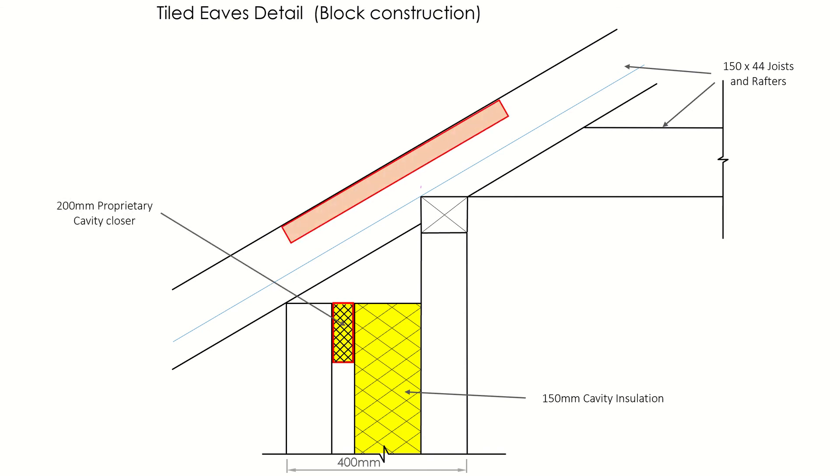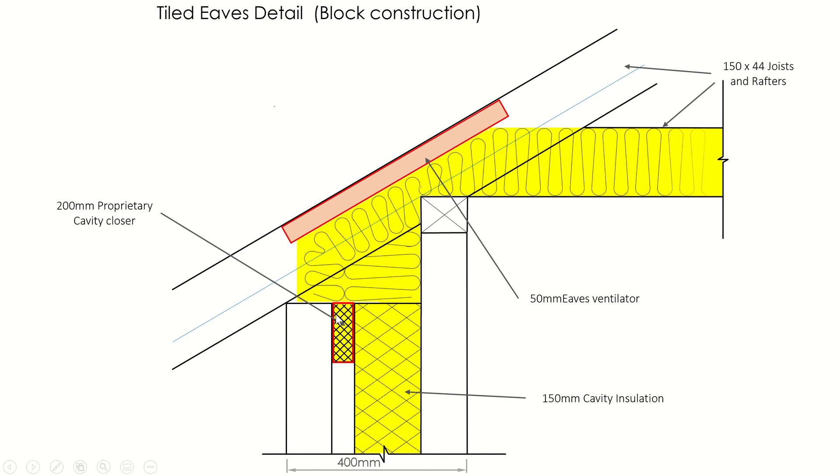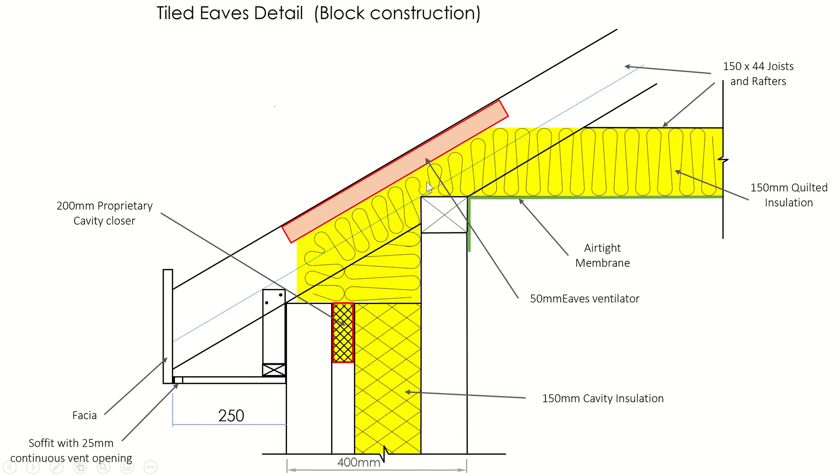After that I'm putting in the eaves ventilator to allow ventilation up, and your insulation goes in under that. That's your quilted insulation or bat insulation. Next I'm inserting my fascia board. That distance there, I'm going 250, it could be 300. That's my fascia and then my soffit with my air vent. There's a 25mm air vent here. This is a bracket that holds my soffit in position. The soffit has a 25mm continuous vent opening to allow air in. Very important that the roof can breathe, the timber needs to breathe. Air needs to get in.